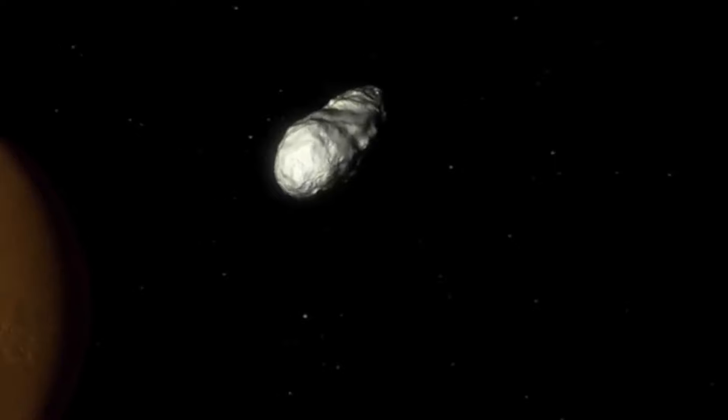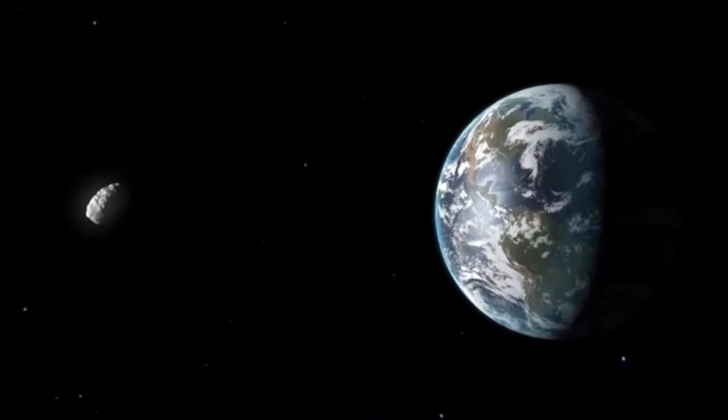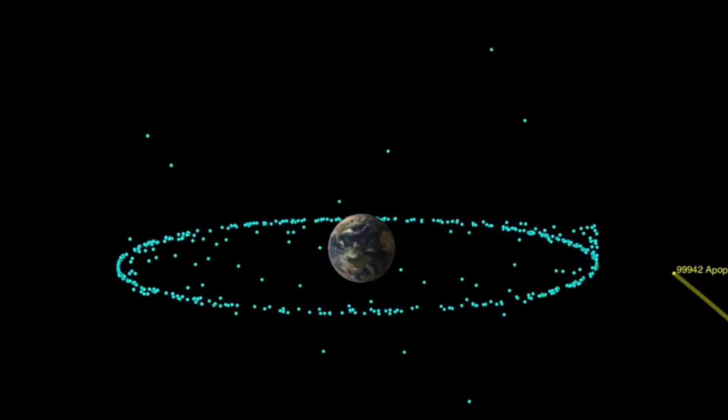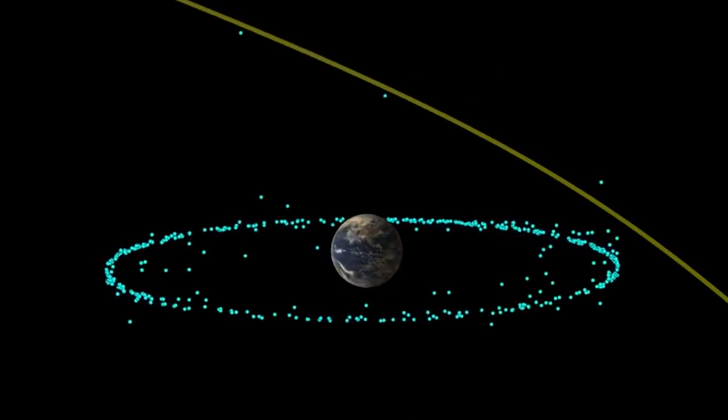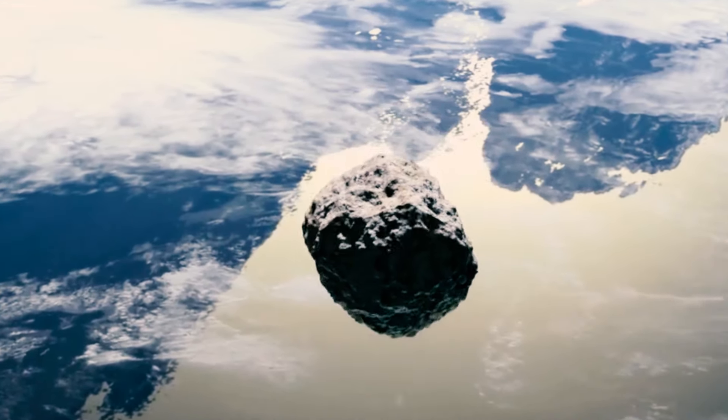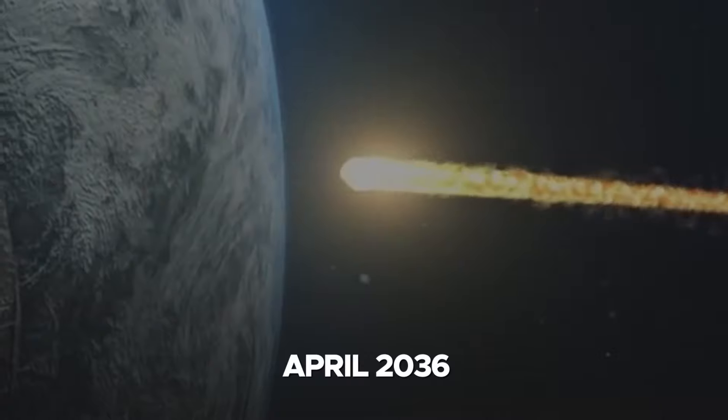However, scientists identified that during Apophis' 2029 flyby with Earth, it would traverse a gravitational keyhole with a diameter of no more than about 500 miles. This raised the potential for a future impact precisely seven years later, in April 2036.